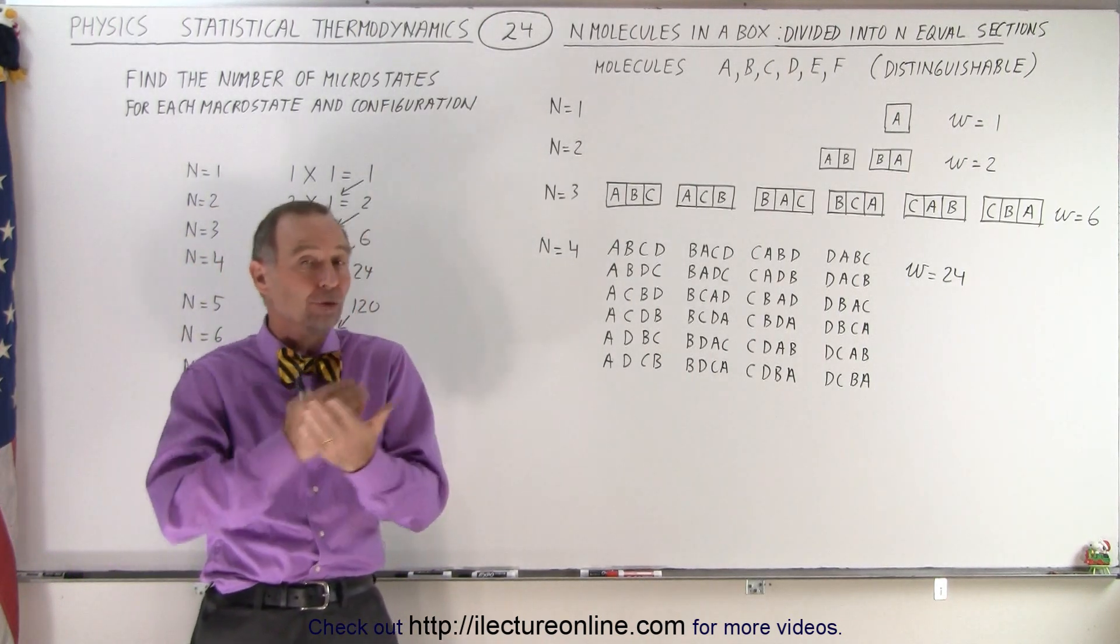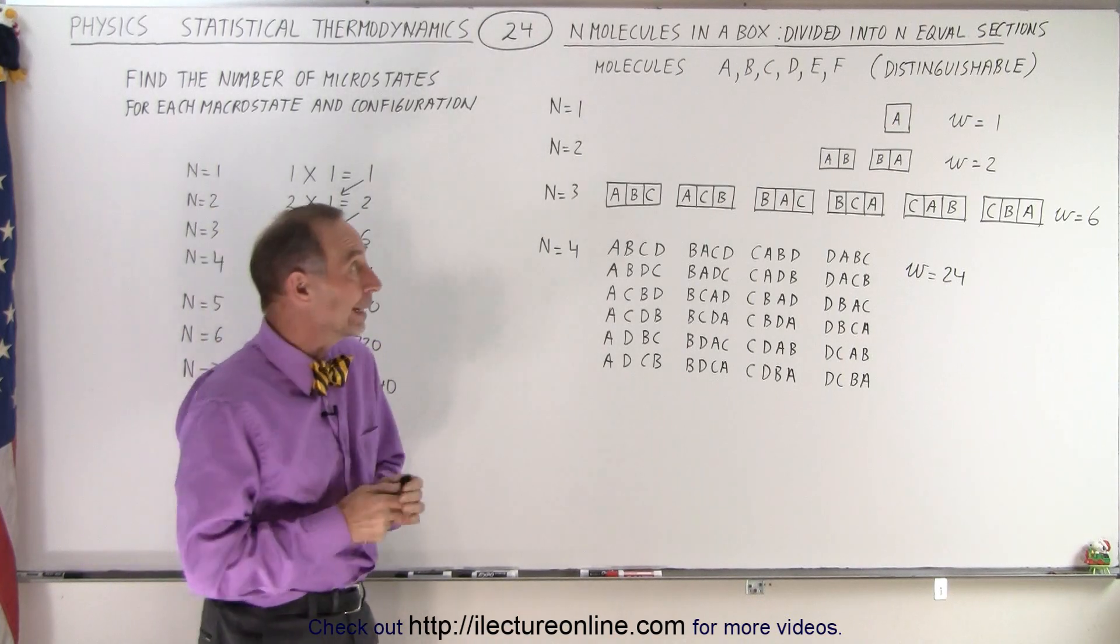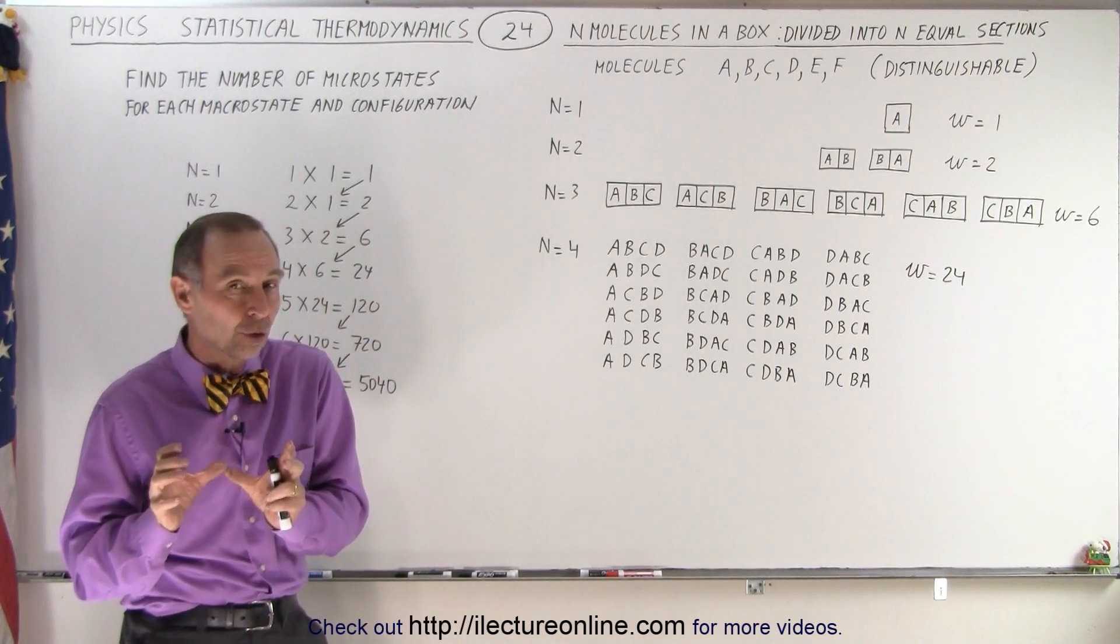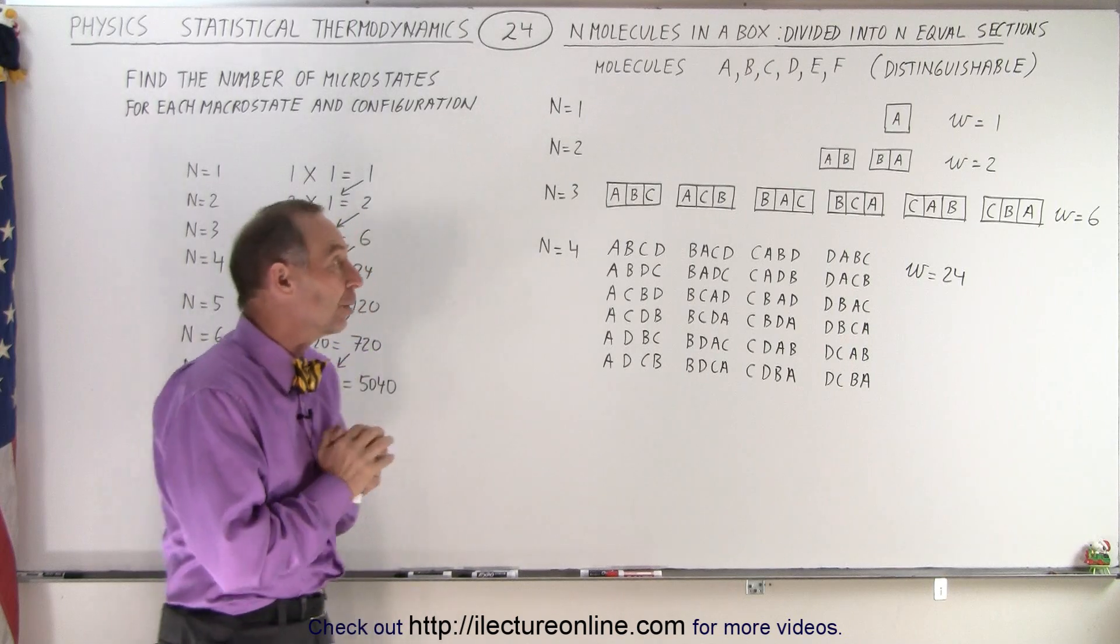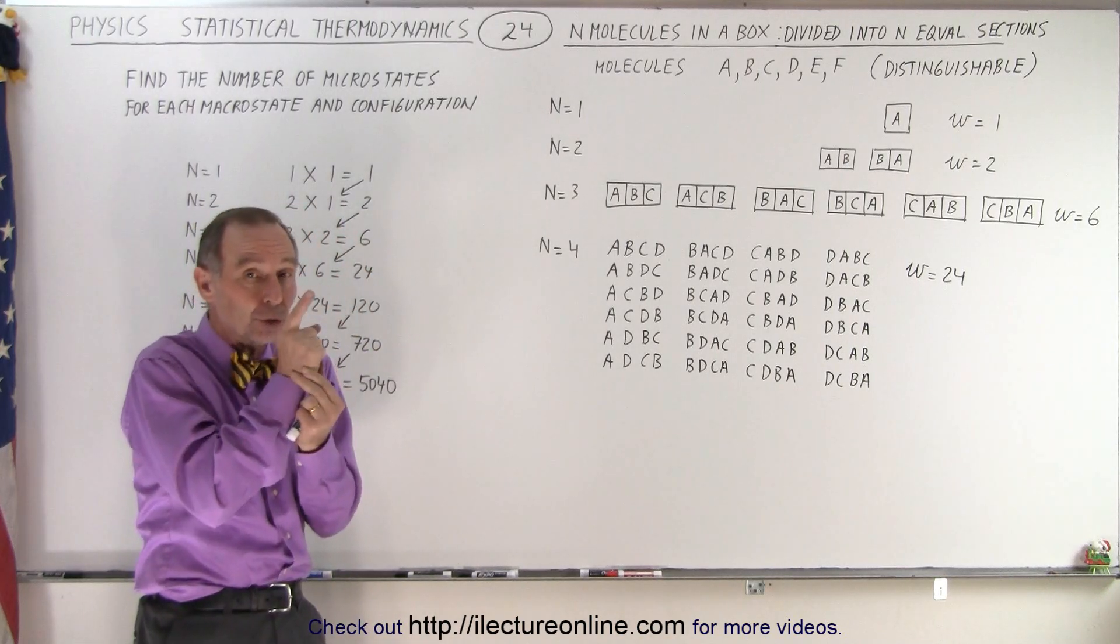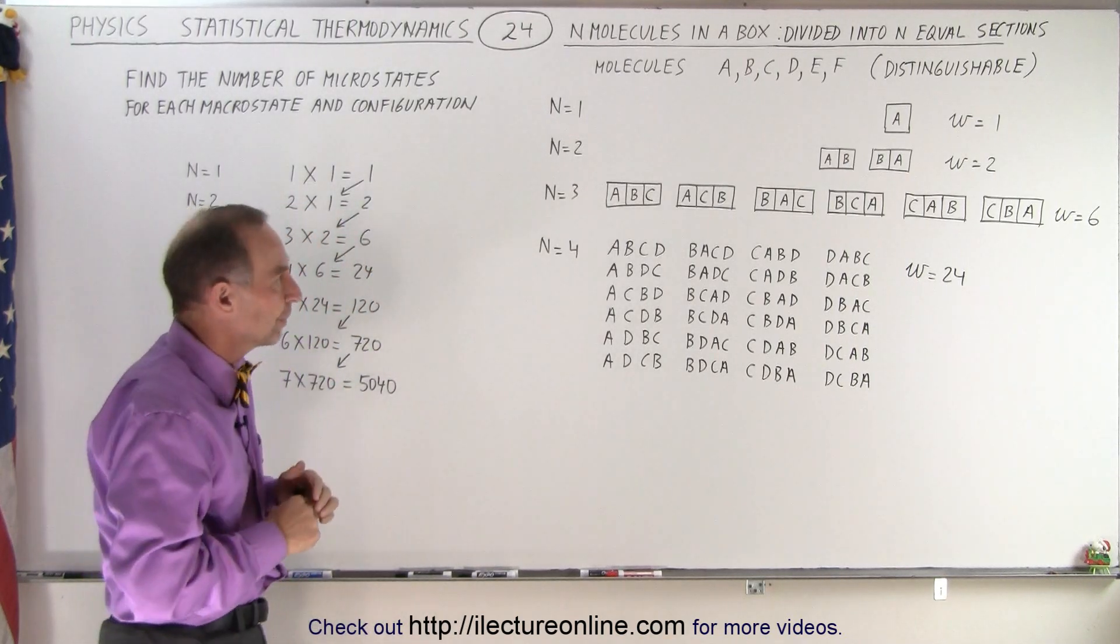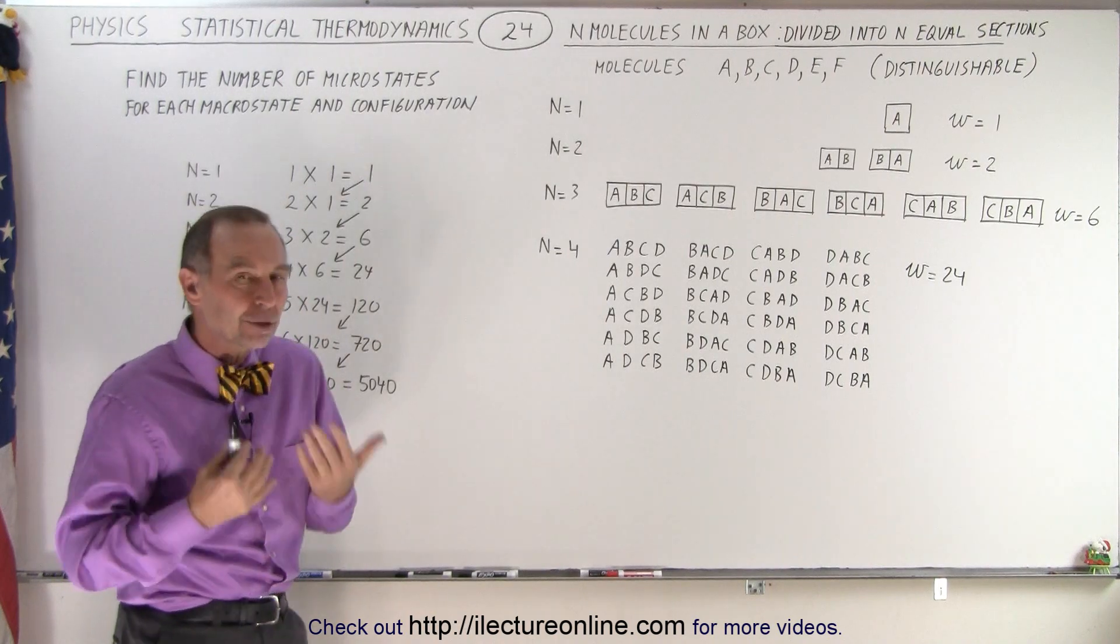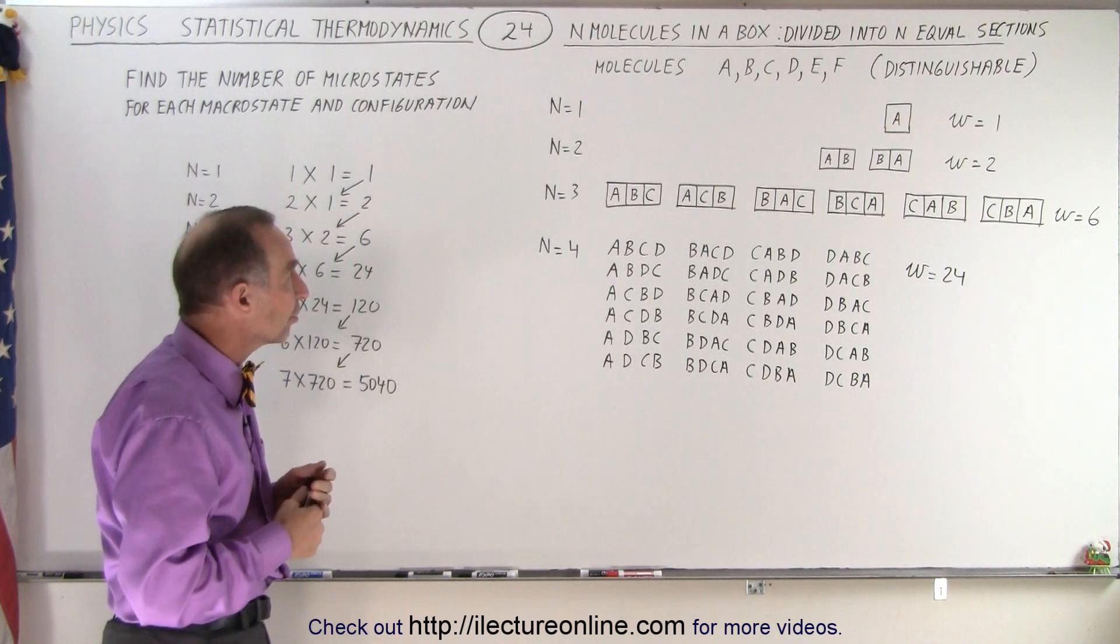And n starts from 1 and goes to 2 and goes to 3 and so forth. An equal number of partitions to an equal number of molecules so that we end up with one molecule in each partition. What does the number of microstates look like for each of these cases?